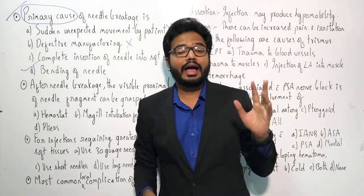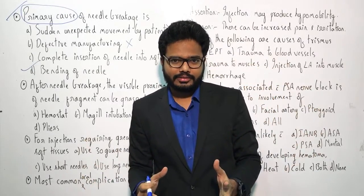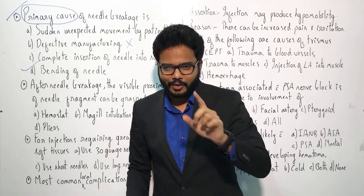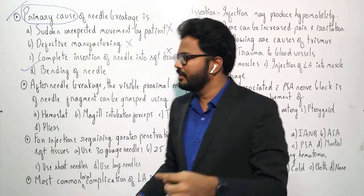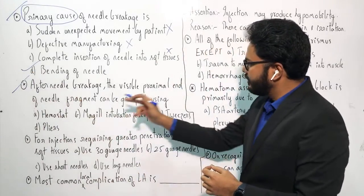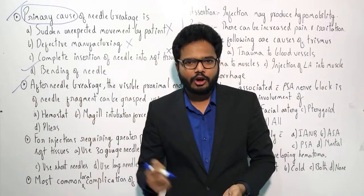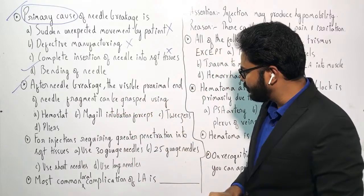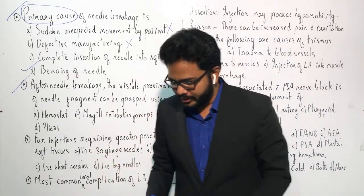It doesn't matter if you were wrong as long as you're willing to learn from mistakes. Do score simultaneously. Second question: after needle breakage, the visible proximal end of the needle fragment can be retrieved using hemostat, Magill intubation forceps, tweezers, or pliers — which is more appropriate?